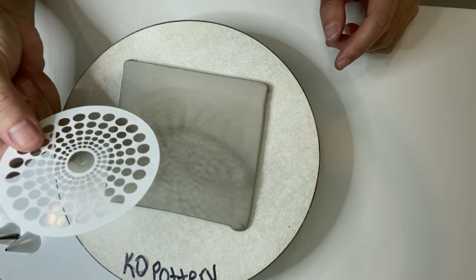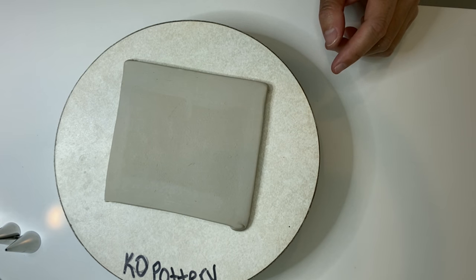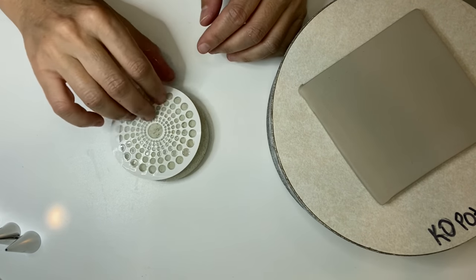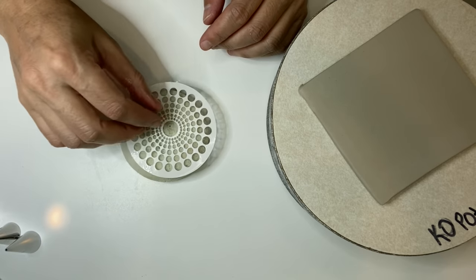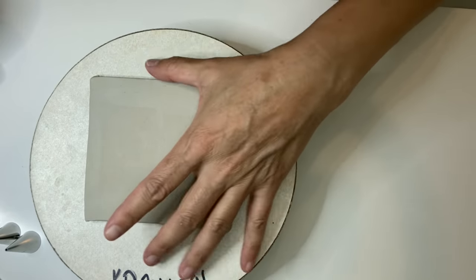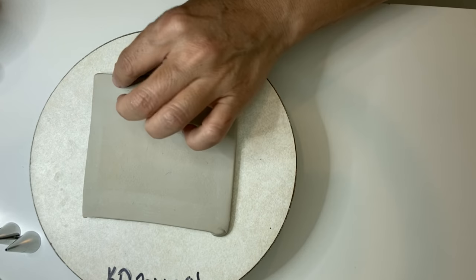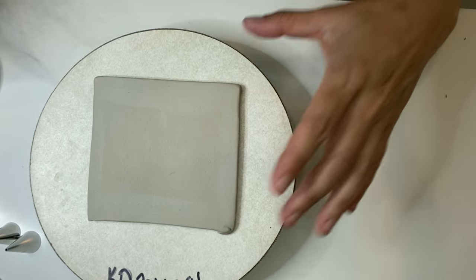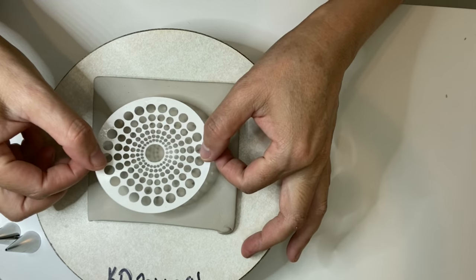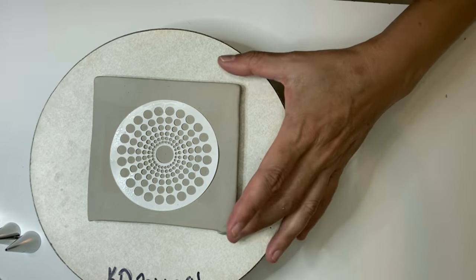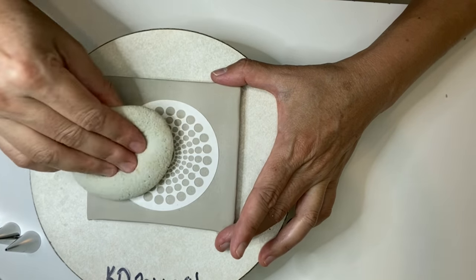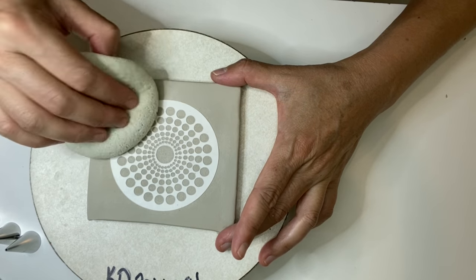But first I want to wet it in some water just for a couple of seconds and then I'm going to gently tap it onto my sponge. This is just a simple leather hard slab that I thought would be easier to show you how to do my decoration. Okay, so I'm going to put that there. I'm going to gently just tap that and make sure there's no air pockets inside the paper and the clay.